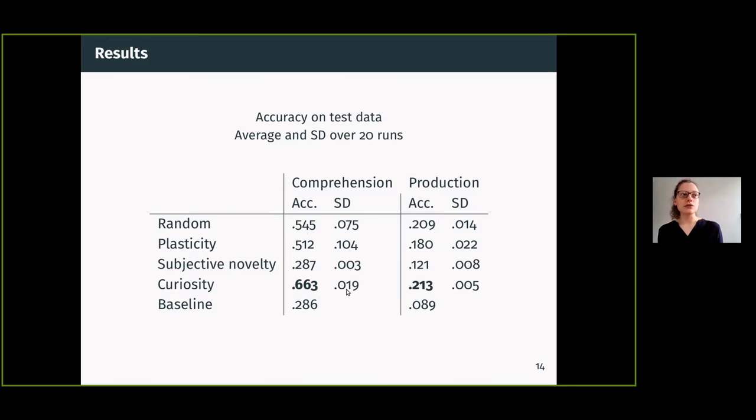Another thing that we can see is that the standard deviation—this is averaged over 20 runs—the standard deviation in the curious condition is the lowest, which means that most of the runs converge to the same level, whereas for the random condition there's a bit more variation, and for plasticity as well.